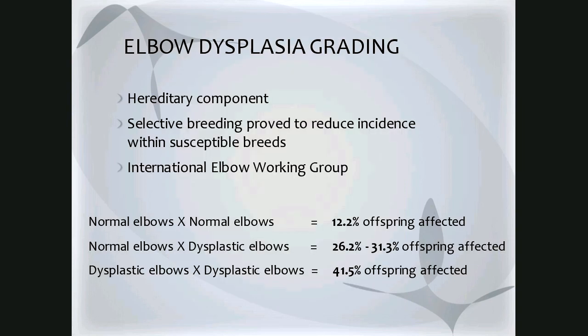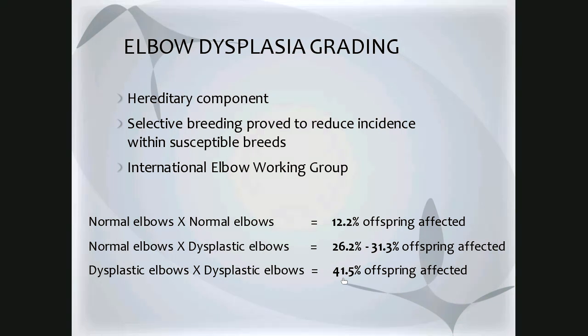Because of the hereditary component of elbow dysplasia, screening and grading prior to breeding is very important. Selective breeding has proven to reduce incidence within susceptible breeds, and the International Elbow Working Group aims to increase knowledge, awareness, and screening plans. Breeding two parents with normal elbows results in only 12% of offspring being affected. With one dysplastic parent, 26–31% may be affected. With both parents dysplastic, up to 41.5% of offspring may be affected.